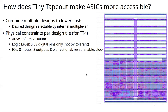So how do they do it? First, they combine multiple designs together, spreading the cost of a tape-out across a larger group of people. As you can see in this diagram, the chip has many grids — each one is one design — and designs are selected using a multiplexer. They also limit what you can do: the area is 160 by 100 micrometers, logic level is 3.3V digital only, and you get eight inputs, eight outputs, eight bidirectional pins, plus reset, enable, and clock.